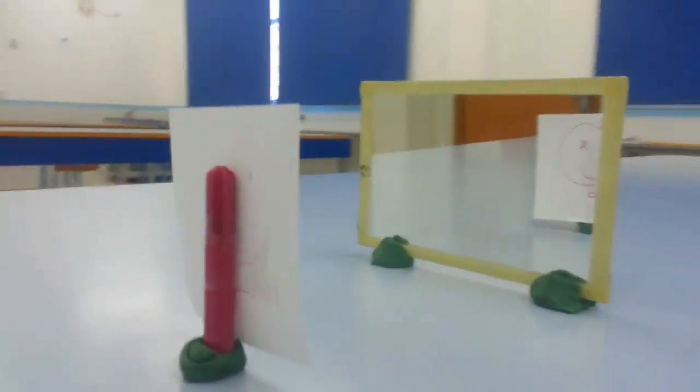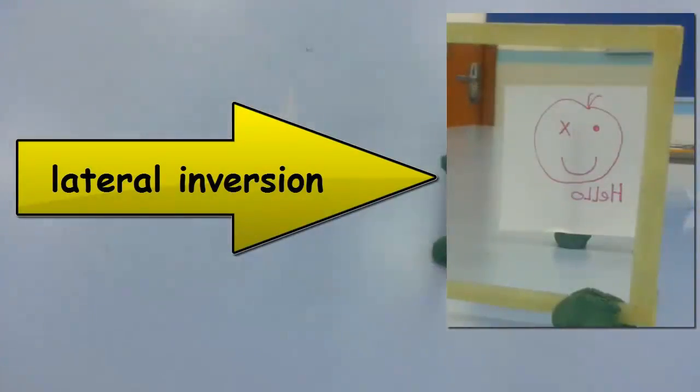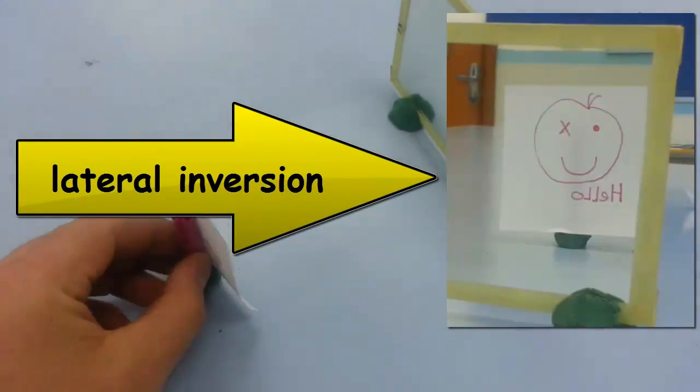When you look into a mirror, you see that letters appear backwards. This is called lateral inversion.